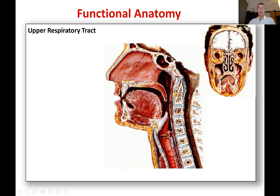Here's a diagram illustrating the upper respiratory tract. The point at which the upper respiratory tract ends and the lower respiratory tract starts is right here at the level of the vocal cords. Above here is upper respiratory tract, below there is lower respiratory tract. That's a very important division.